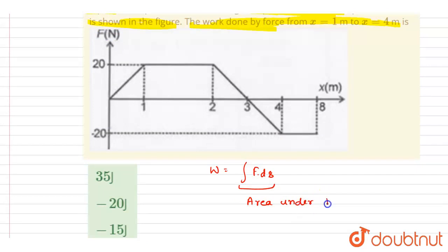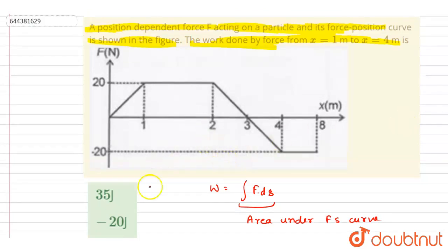If you see here, we want the work done from x equals to 1 to x equals to 4, from here to here. So let us calculate the area.